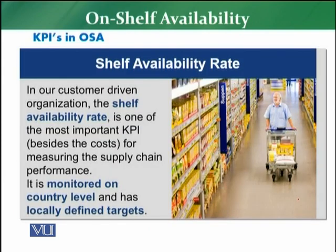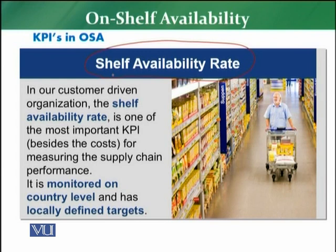What is the key KPI for on-shelf availability? It is the shelf availability rate. The target for a retail store is to achieve 90%, 95%, 98%, and ideally 100%. In a customer-driven organization, the shelf availability rate is one of the most important KPIs — for measuring supply chain performance, operations performance, and buying performance. It is key for all stakeholders.